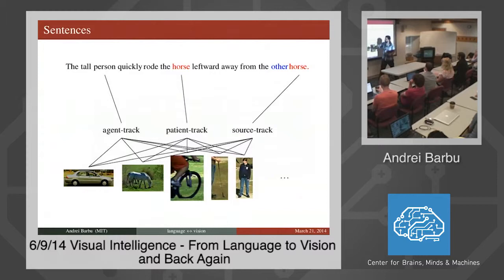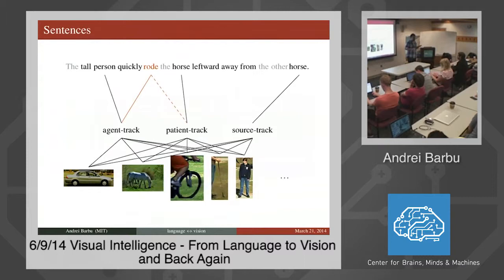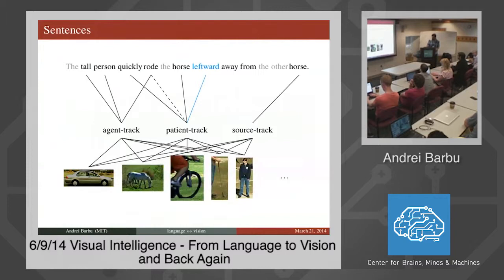A sentence isn't just a bag of words — it has internal structure. Some words refer to some participants, and participants play different roles. Using a dependency parse, you can determine how many objects participate in a scene. For example, a sentence might indicate two horses and one person. From the dependency parse, we determine we need three tracker lattices plus word lattices for the other words. A verb like 'ride' connects to the agent and patient, telling us the person is riding the horse — which is important, because you really don't want to find horses riding people.